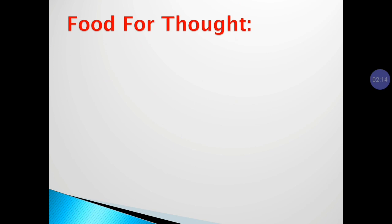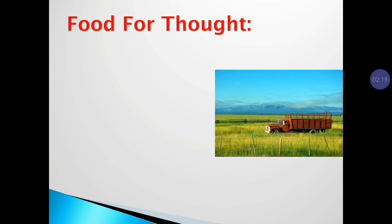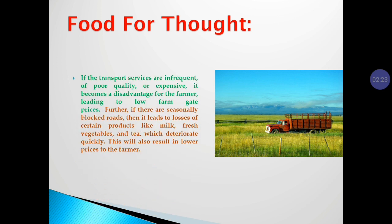Now we will look into food for thought. Agriculture is our greatest industry, transportation our second greatest. These two industries are dependent upon one another, and national well-being is dependent on both. If transport services are infrequent, poor quality, or expensive, it becomes a disadvantage for the farmer, leading to low farm gate prices. If there are seasonally blocked roads, it leads to losses of perishable products like milk, fresh vegetables, and tea. In India, strong initiatives are taken to improve transportation. The Union Agriculture Ministry has started an all-India agri-transport call centre for coordination between states for inter-state movement of perishables, vegetables, fruits, and agri-inputs like seeds, pesticides, and fertilizers. The call centre is accessible from any mobile or landline phone.